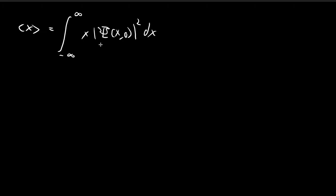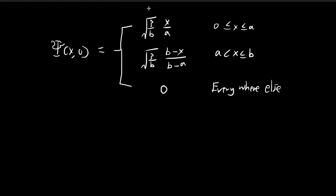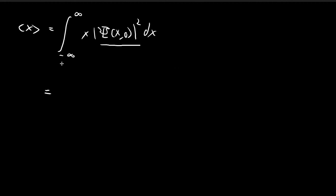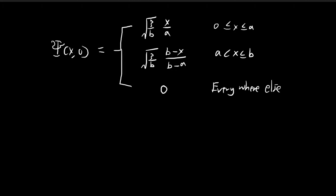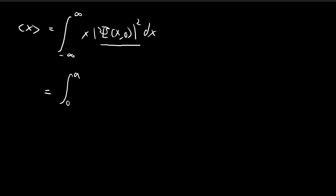This is the probability density function, and you multiply it by x, then integrate through all possible space — from negative infinity to positive infinity — and this gives you the expected value. From negative infinity to 0, the wave function is just equal to 0. From 0 to a, the wave function equals this expression, so we just need to square it.